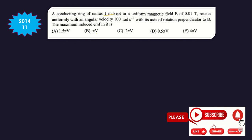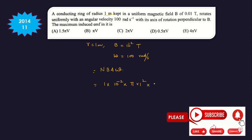Question 11 (2014): A conducting ring of radius 1 meter, kept in a uniform magnetic field of 10⁻² tesla, rotates uniformly with an angular velocity of 100 rad/s, with its axis of rotation perpendicular to B. The maximum induced EMF = NBAω = 1 × 10⁻² × π × 1² × 100 = π volt. So B is the answer.